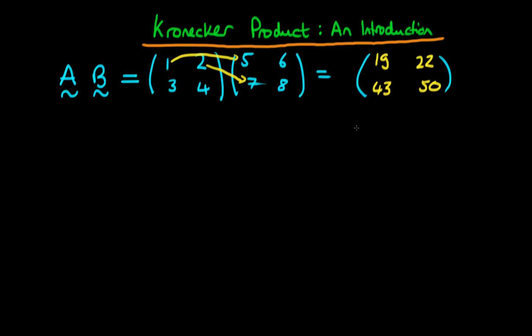So this is the ordinary product of two matrices and I expect everyone watching should be familiar with this concept. But it turns out there's another way to define the product of two matrices known as the Kronecker product, which is useful in certain applications, particularly in econometrics.